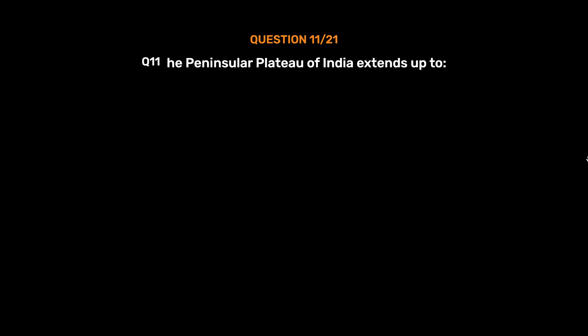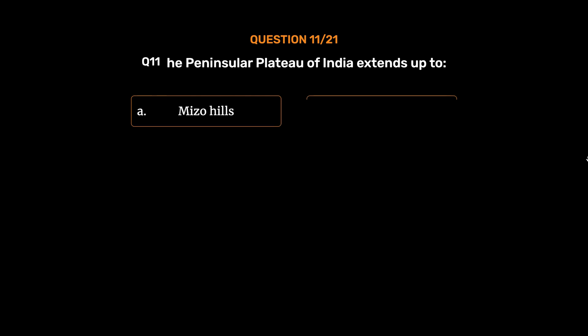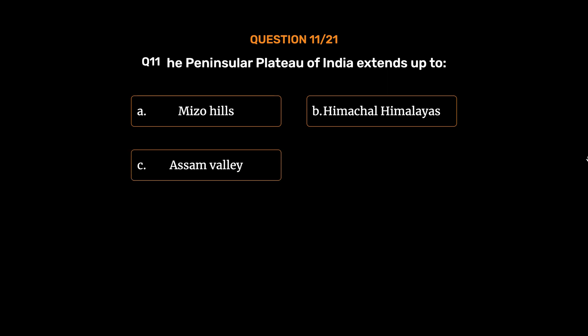Question number 11: The peninsular plateau of India extends up to — Option A: Mizo Hills. Option B: Himachal Himalayas. Option C: Assam Valley. Option D: Meghalaya Hills. The correct answer is Option D, Meghalaya Hills.